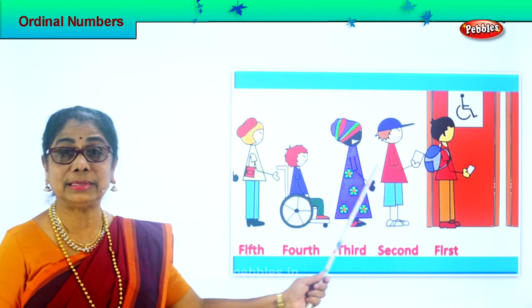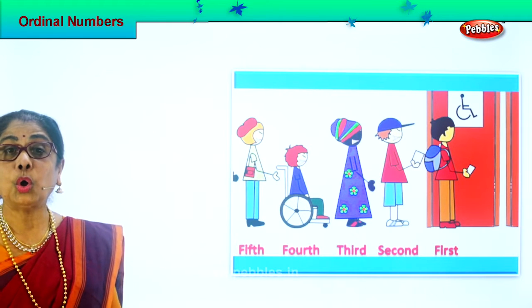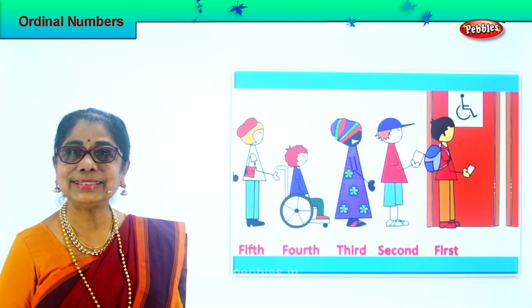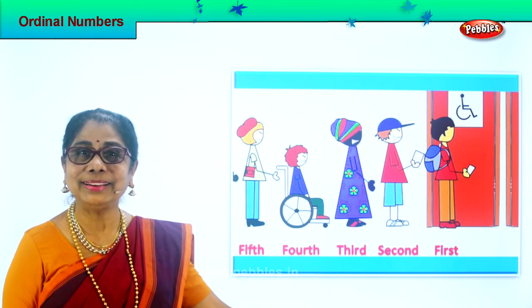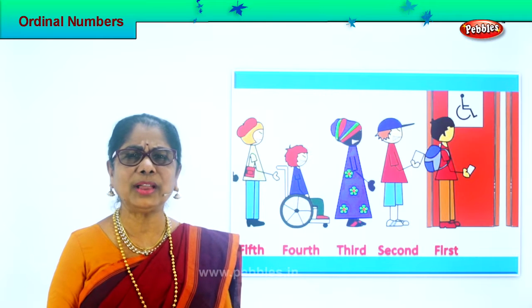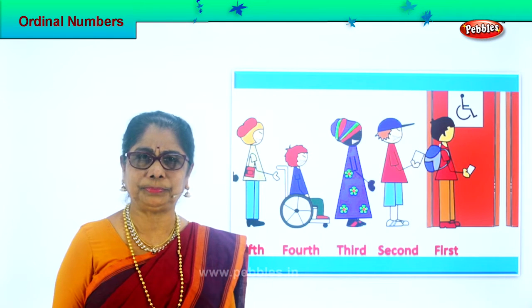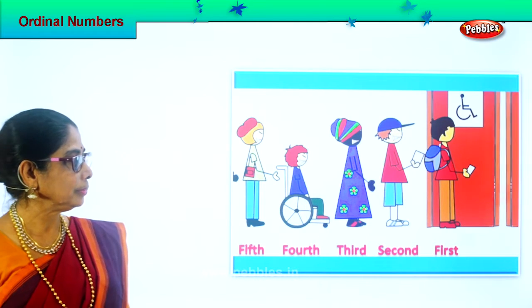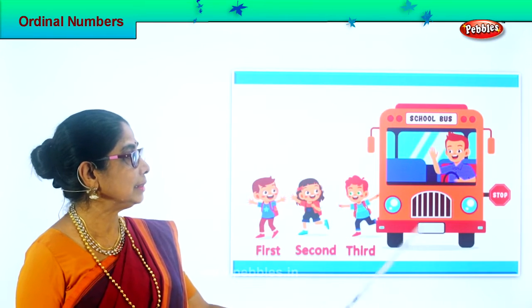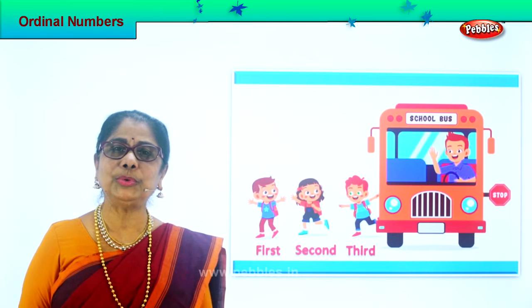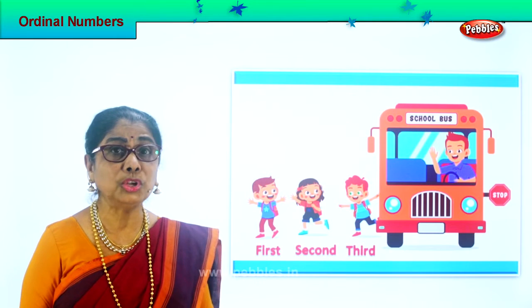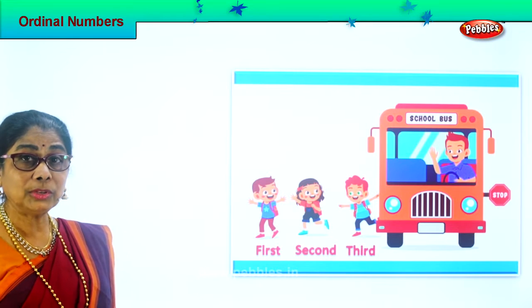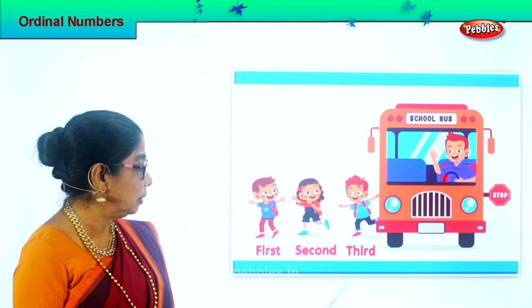All the persons, big and small, are standing in ordinal numbers — no problem here. Let's look at another picture. Look at this school bus. When you enter and when you come out, you cannot rush. You must come out one at a time so that you don't fall.